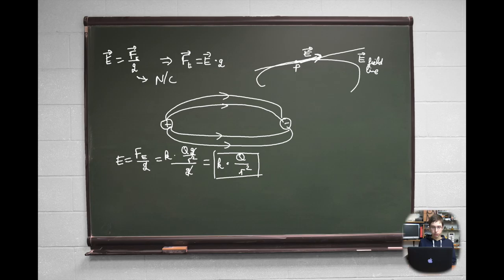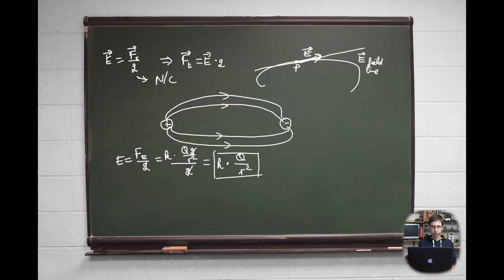A special case of an electric field is the homogeneous electric field — an electric field that is equal at all of its parts, meaning all electrostatic force vectors on a test charge in the field have the same magnitude and direction. Therefore, the field lines of this electric field are parallel to each other and equally dense, meaning equally spaced. That kind of electric field is present in capacitors, which we will talk about more in the next video about electrostatics.